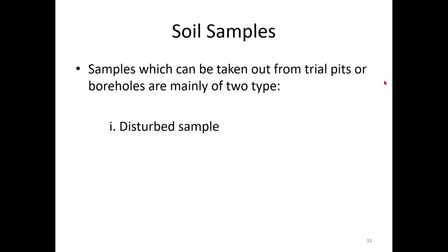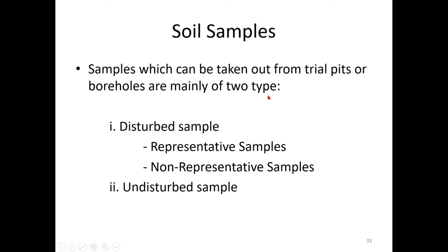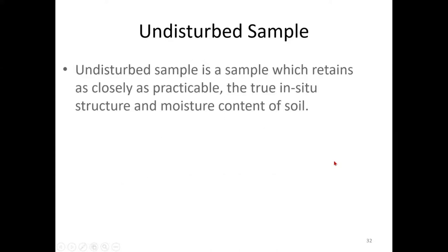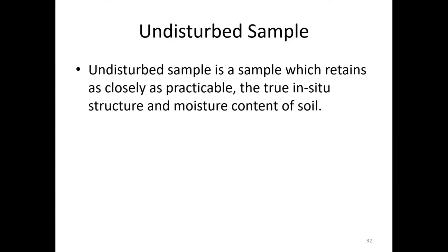Different types of soil samples are collected from a site. There are two types: disturbed samples and undisturbed samples. An undisturbed sample retains as closely as possible the true in-situ characteristics of the soil and the moisture content — it represents the site soil condition most practically in the lab. These undisturbed samples are required for shear strength, permeability, and consolidation tests — these are the engineering properties of the soil that require undisturbed samples.